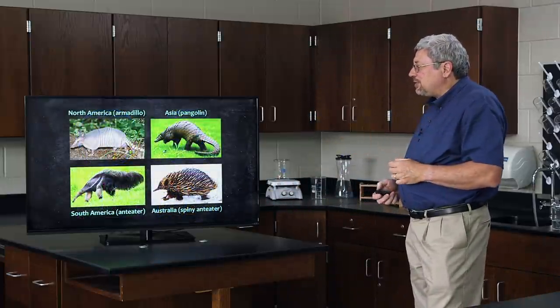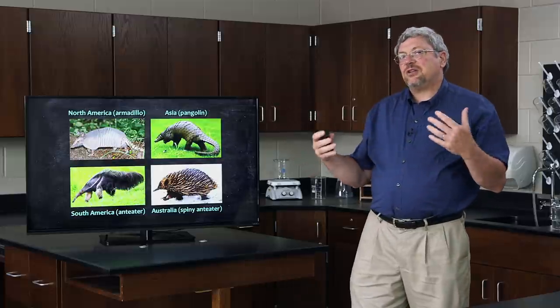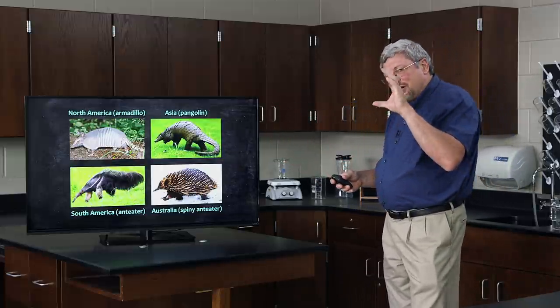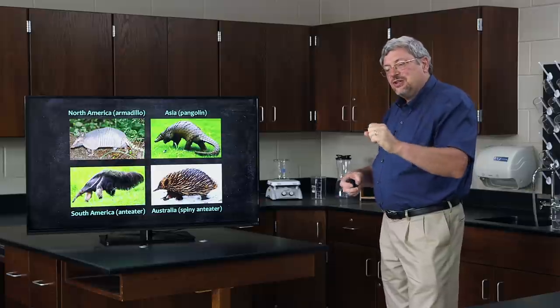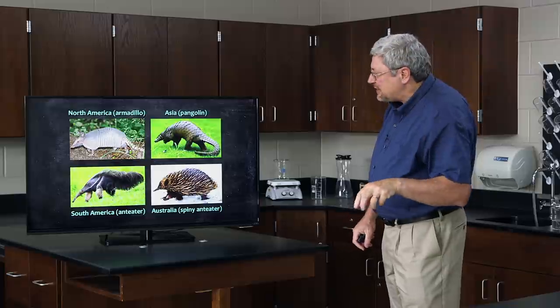Just by creating multiple continents, he can further multiply the diversity of life. Here's an example of a set of anteaters on different continents: the anteating armadillo in North America, the pangolin in Asia, the South American anteater, and the spiny anteater of Australia. Each one has similar designs — God created them to eat ants on different continents. Each has a narrow, long nose with a very long tongue to reach in and grab ants.